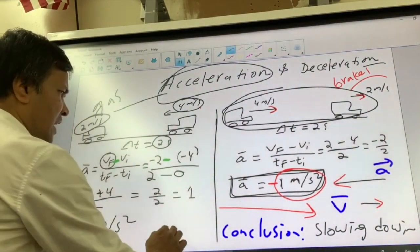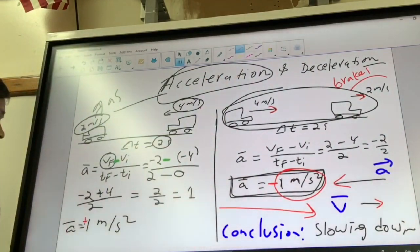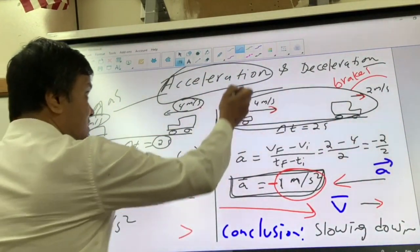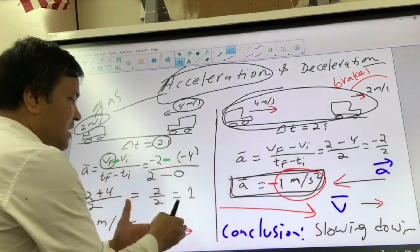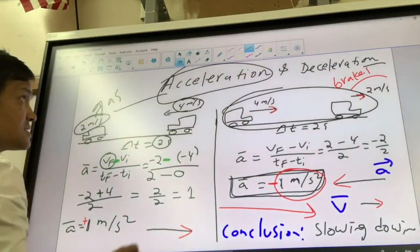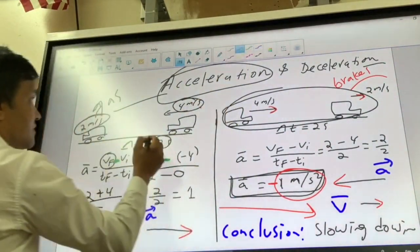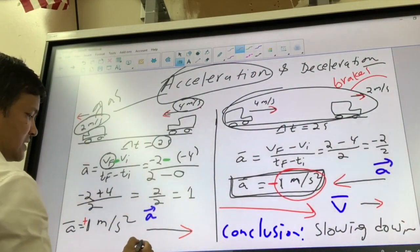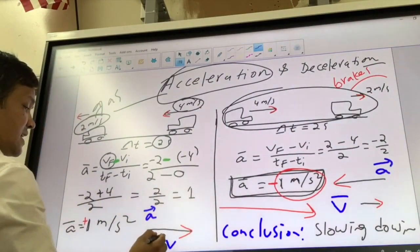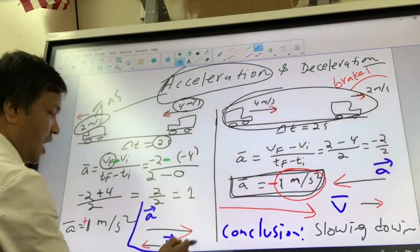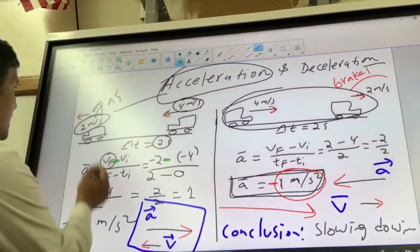The acceleration is positive 1 meter per second squared. Since it's positive, the direction is to the East, and the magnitude is 1. Now for the velocity vector — the direction is to the West. So the velocity vector points West and the acceleration vector points East — they are in opposite directions. When velocity and acceleration are opposite, the car must slow down.